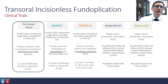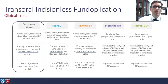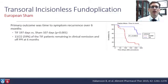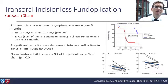The European sham study was a multi-center, randomized, single-blind, controlled study comparing TIF versus sham. The primary outcome was time to symptom recurrence in PPI-dependent GERD patients — those who have reflux well-managed on PPIs but cannot come off PPIs. It was a 1-to-1 ratio: 22 patients TIF with placebo versus 22 sham with PPI. The treatment group had a much longer time to symptom recurrence than the sham group on PPIs. 59% of TIF patients remained in clinical remission and off PPIs at six months. A significant reduction in total acid reflux time was seen, and normalization of acid exposure time was seen in 69% of TIF patients versus 20% of sham patients. Median GERD symptom scores also improved significantly in the TIF group.